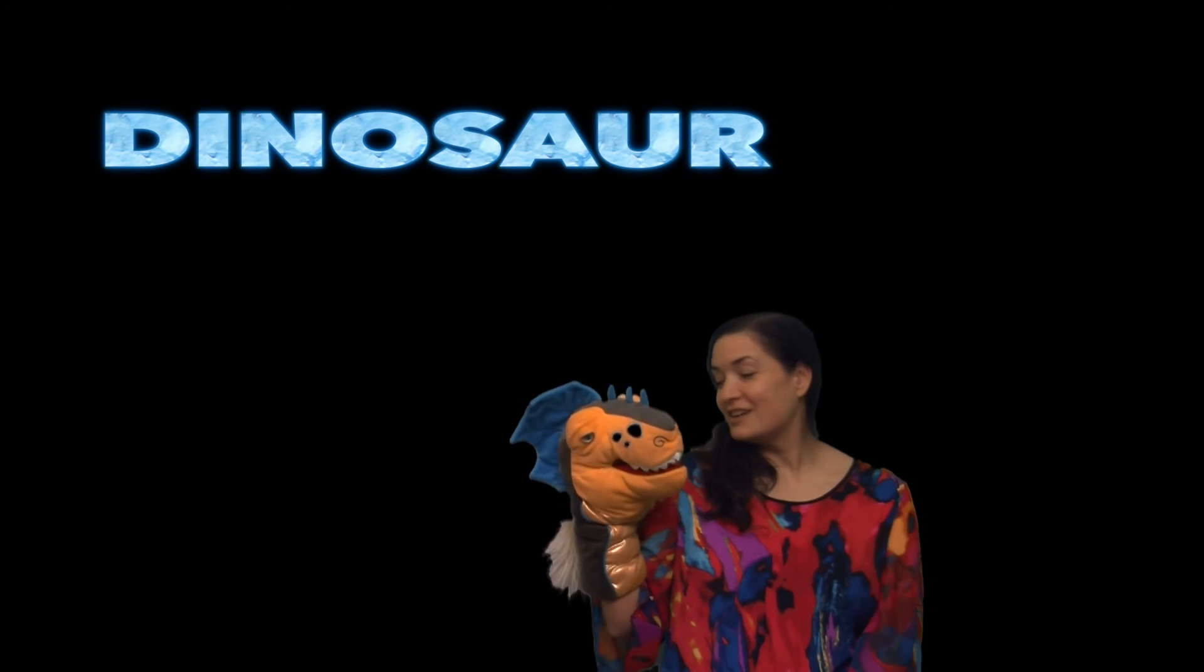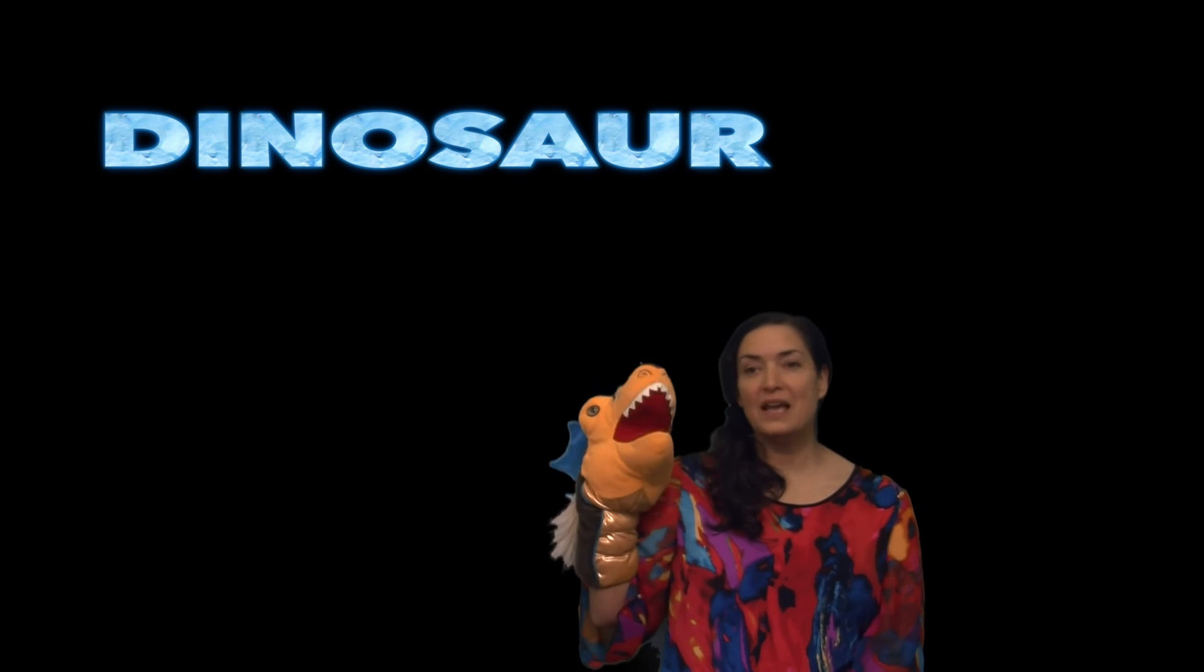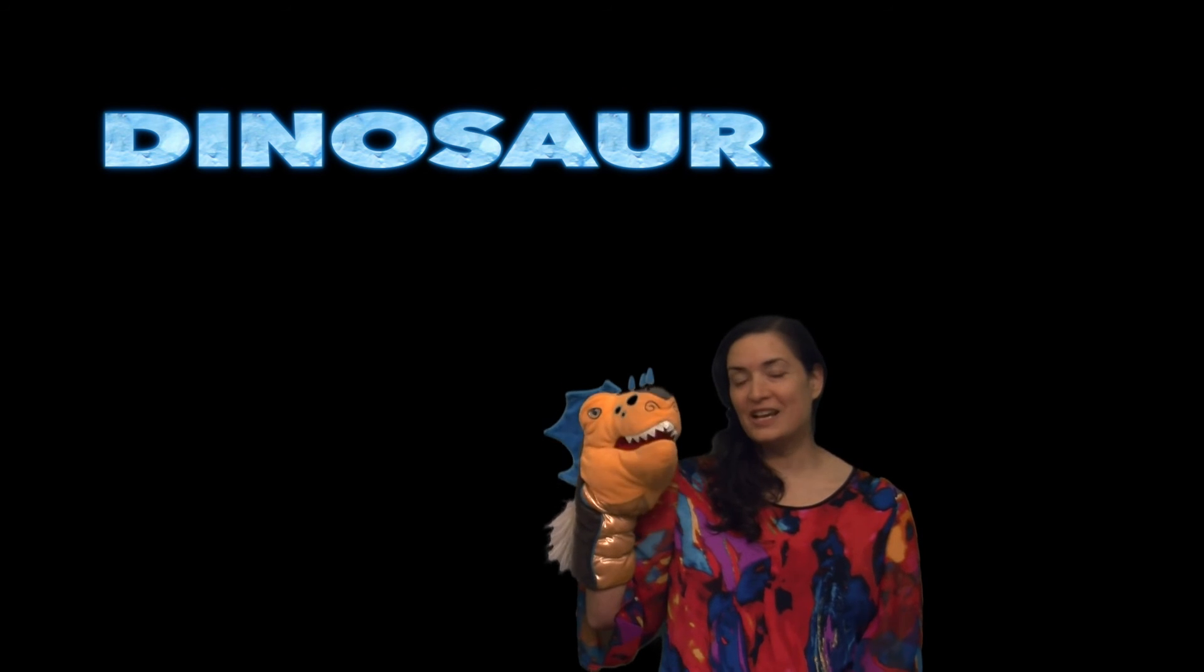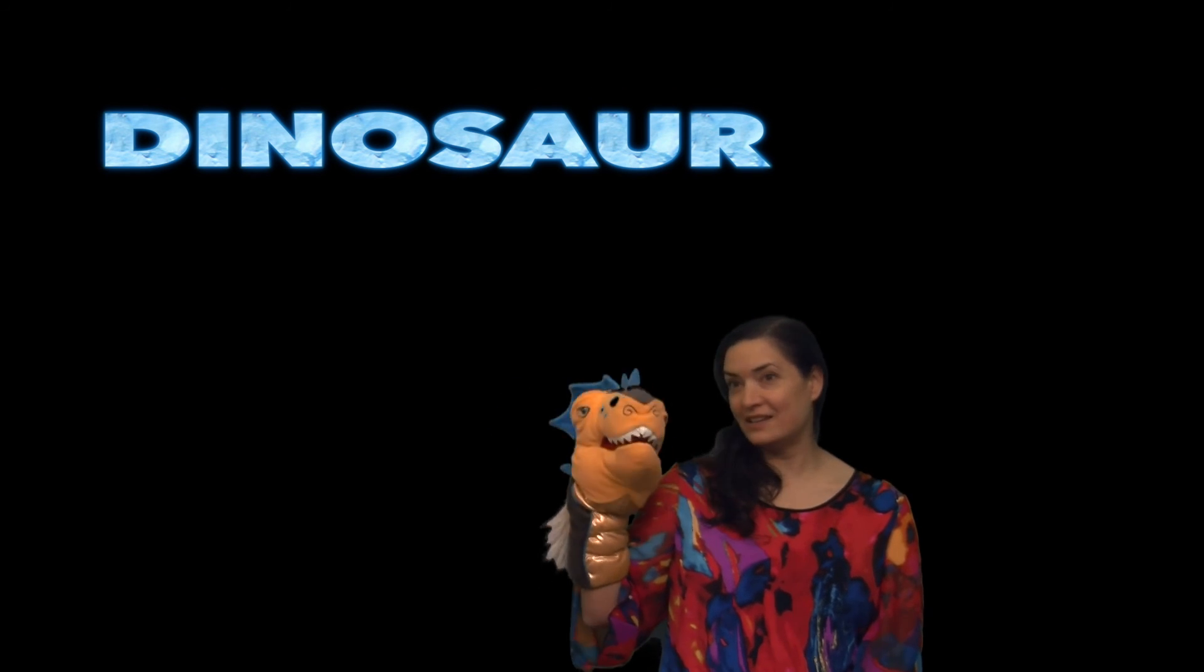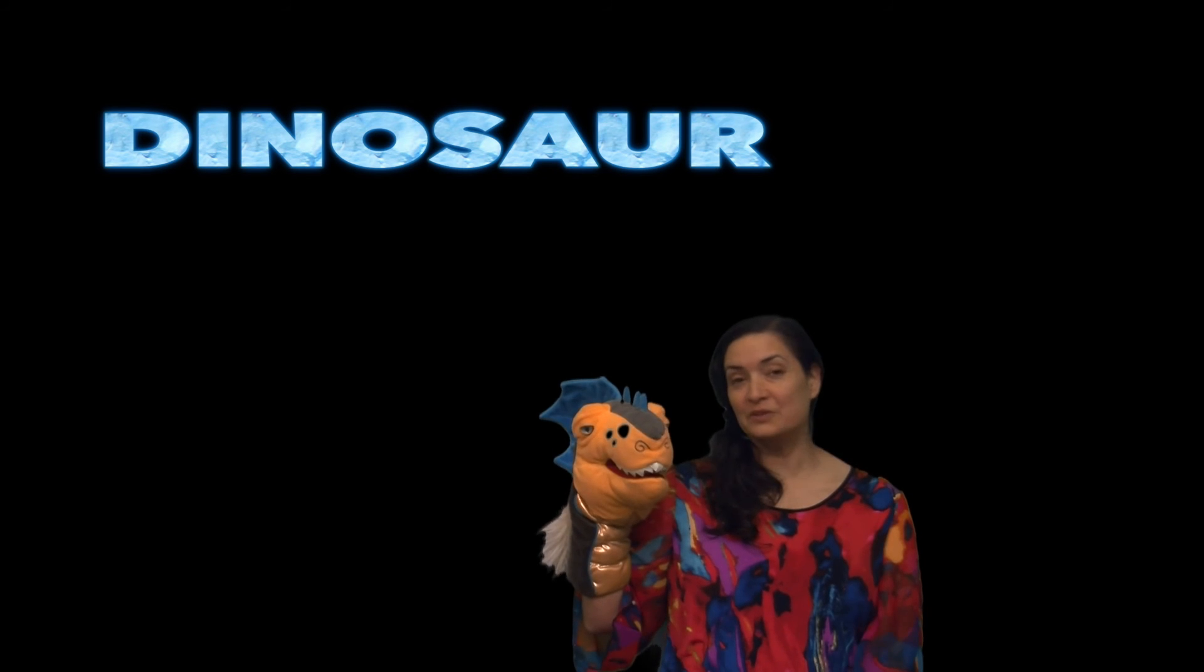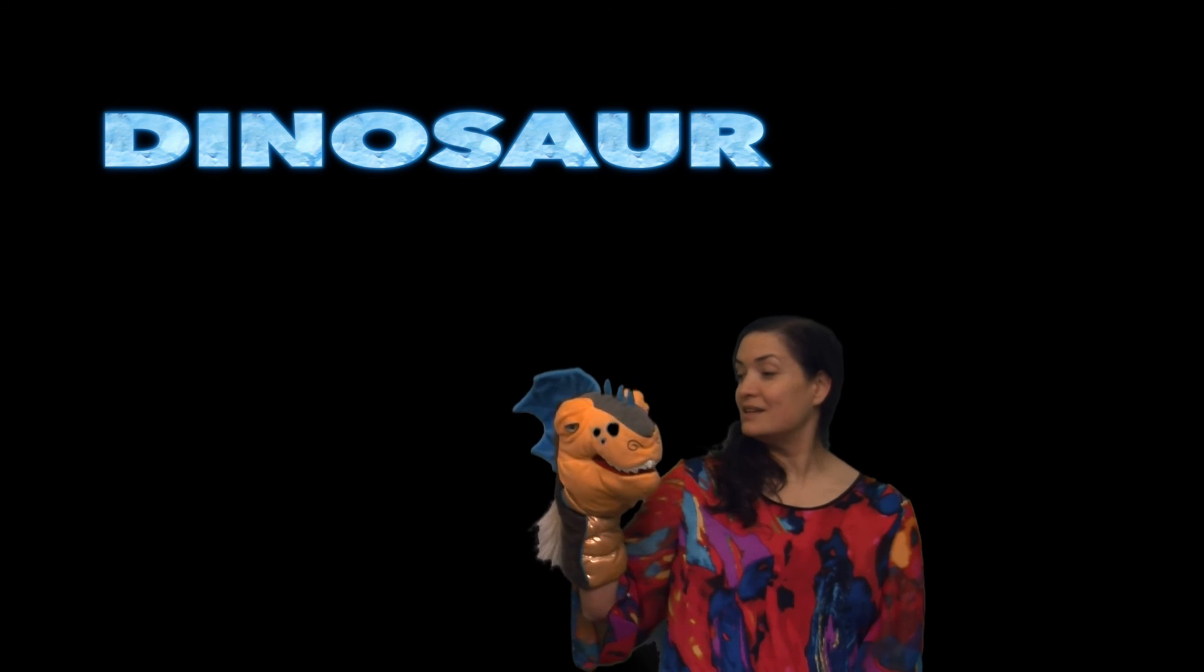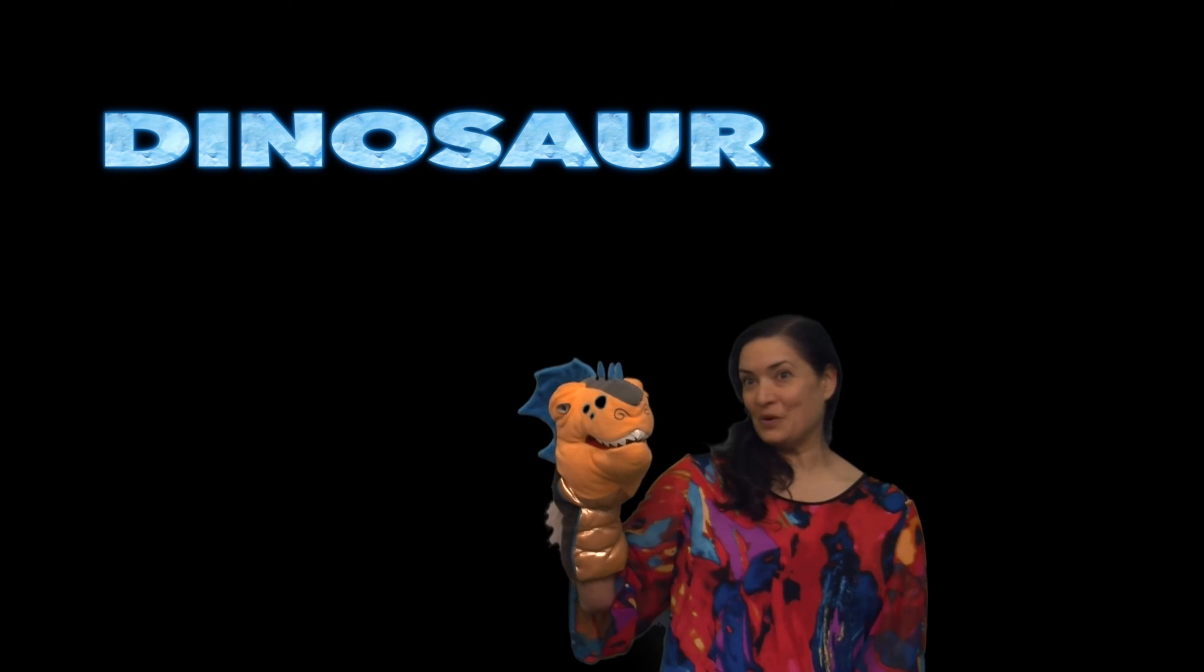Let's see. D. Dog. I. Ice cream. N. Nest. O. Orange. S. Snake. A. Apple. U. Umbrella. R. Rabbit. Dinosaur.